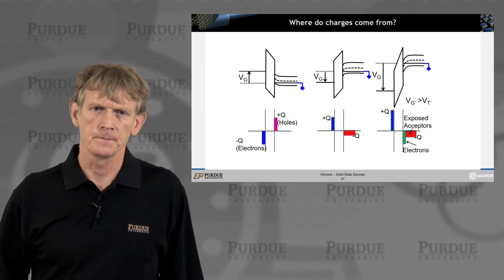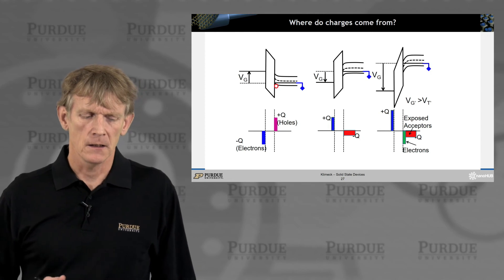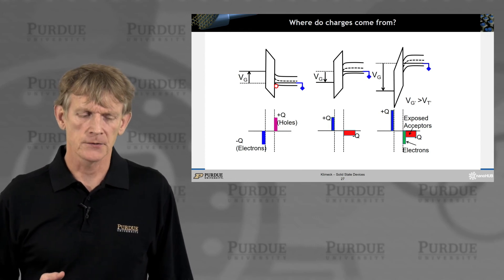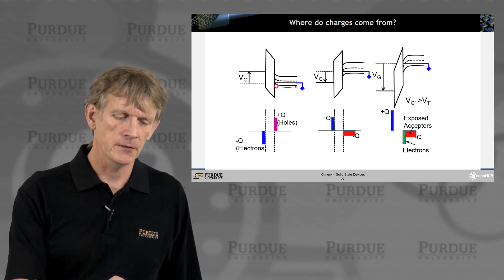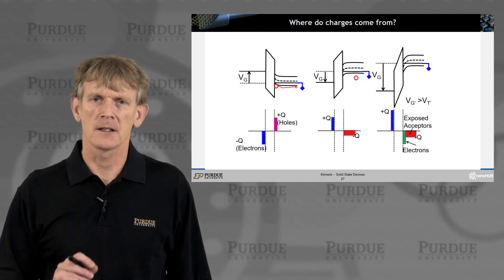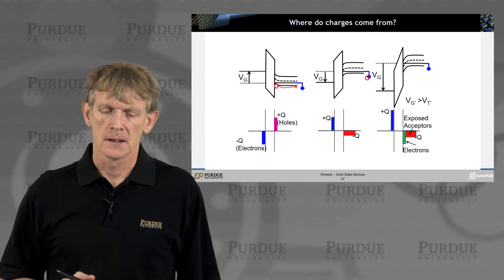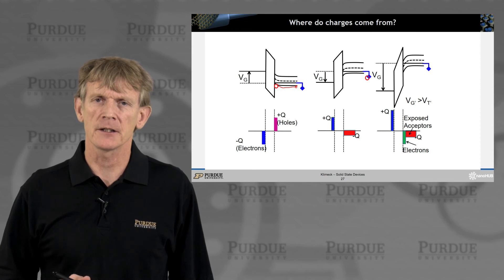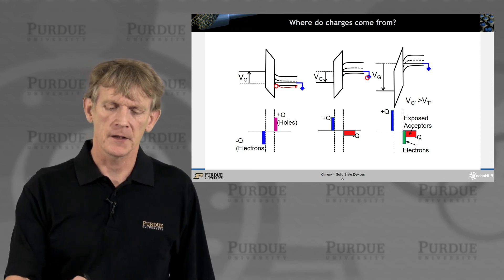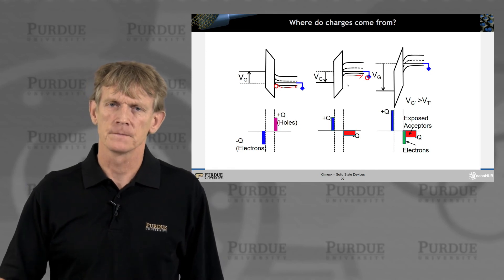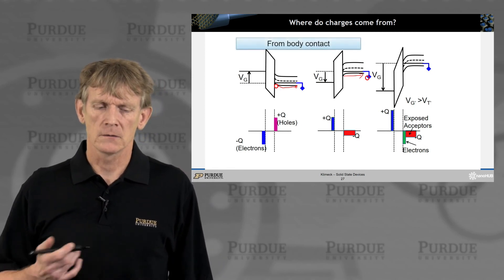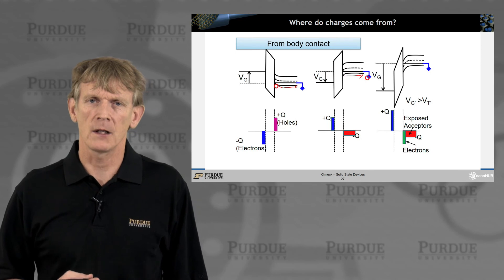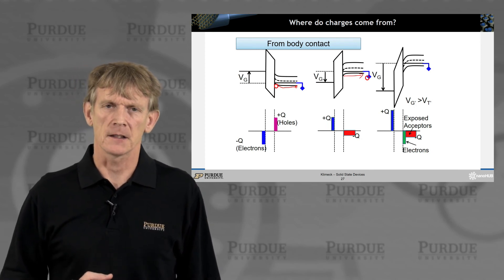All right, so where do these charges come from? On the accumulation side, they certainly are just provided by the battery. So you basically have holes that can travel from here to here from the supply side. They are the majority carriers. On the depletion region, we basically push them out. We push the carriers away from the interface and they just get pushed to the base contacts. Now, so in both of these cases, in accumulation and depletion, carriers are supplied by the body contact.